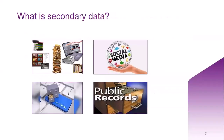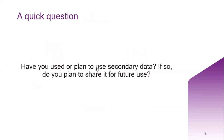Unlike primary data, which is collected by a researcher directly from the original source, secondary data is existing data gathered from studies, surveys, and experiments run by other people or for other research. For example, existing data available at archives or from government organizations, essays, reviews, and information available on social media. Have you used secondary data or planned to use it?